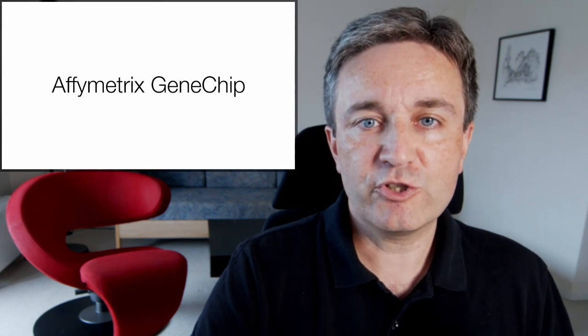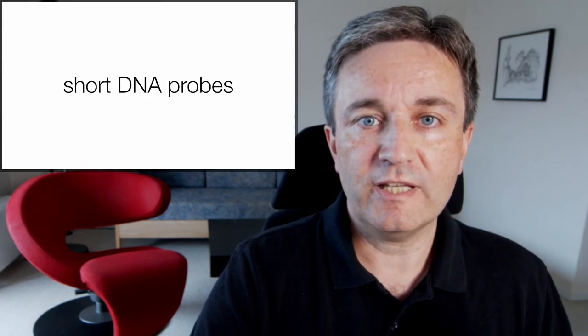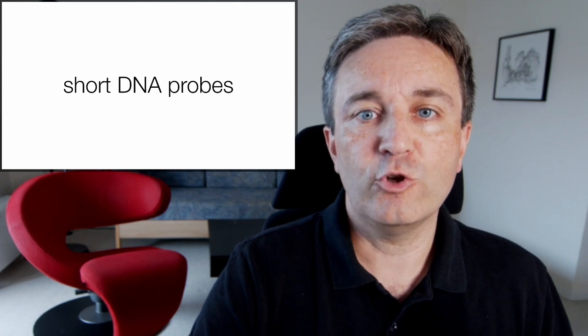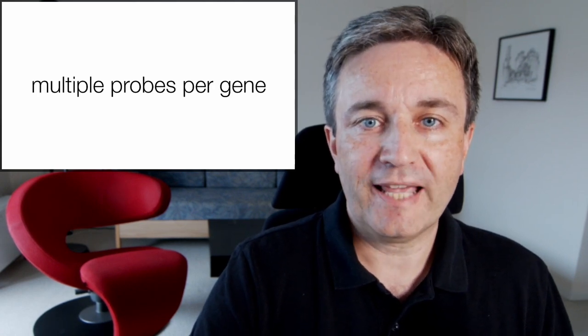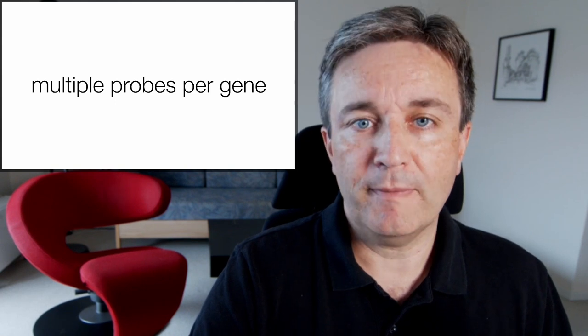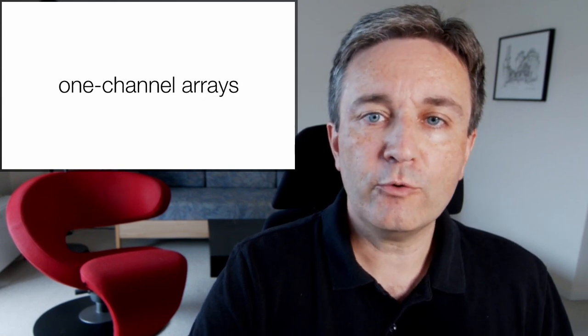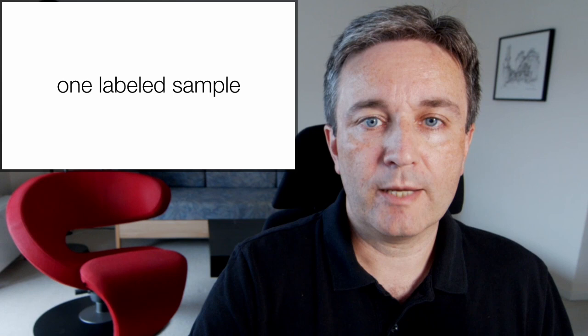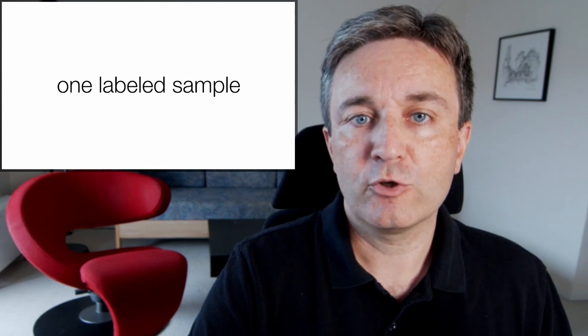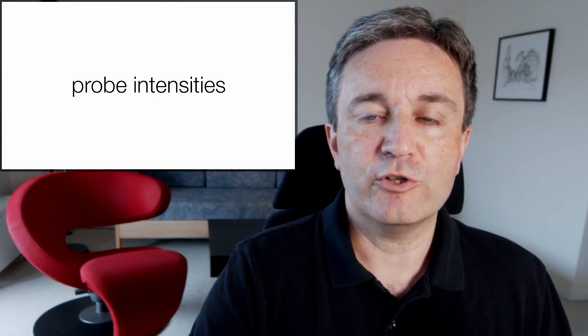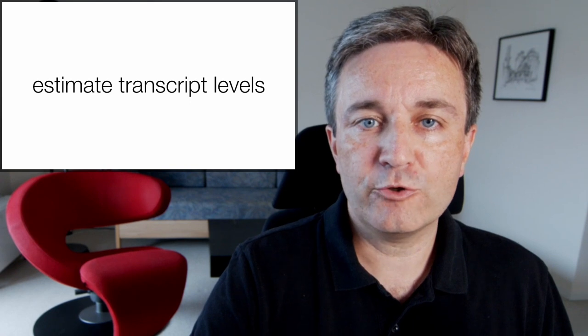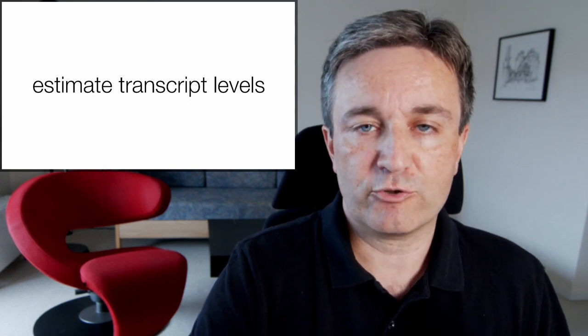The Affymetrix gene chip, by contrast, contains short DNA probes that have been designed to not cross hybridize. On top of that, you have multiple probes per gene giving you multiple measurements. These are known as one channel arrays because you hybridize only one labeled sample to a chip. And the readout is the probe intensities based on which you can get an overall estimate of the level of each transcript.